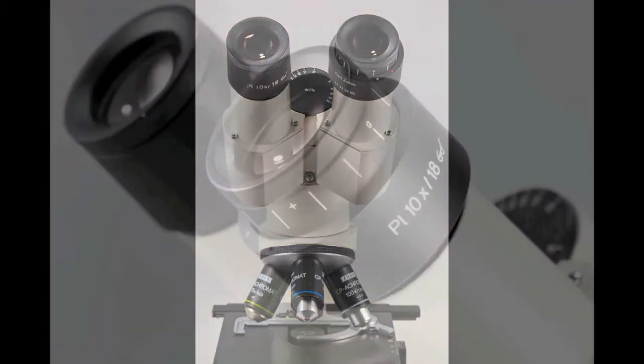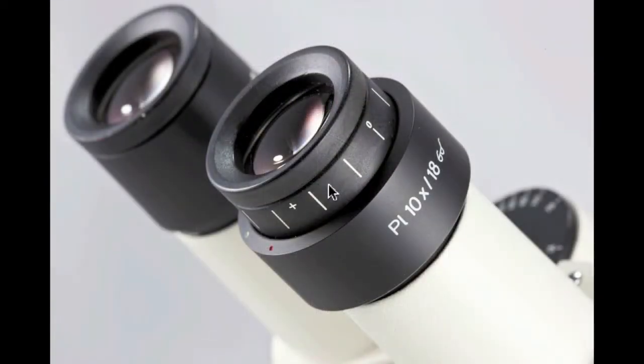rotate the diopter ring on the right eyepiece until the focus is correct in both eyes. This procedure will provide a clearer view of the objects with less strain on your eyes.